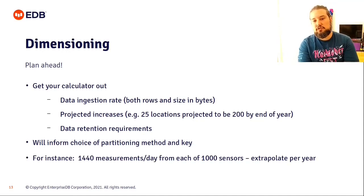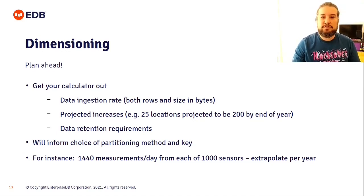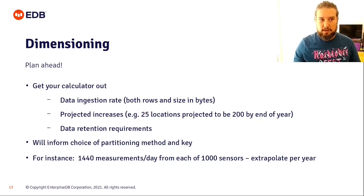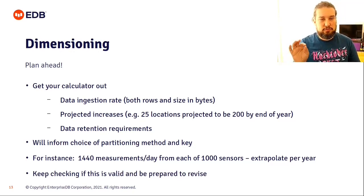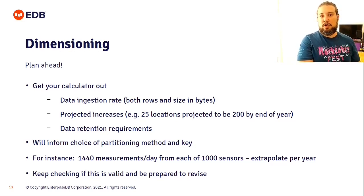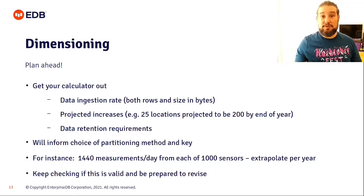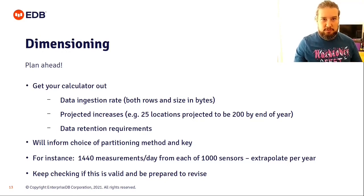One other thing to consider is data retention requirements. If you're required by law to retain data for six years, it's just going to keep increasing in size and you need to factor that in. For example, if you count measurements from a network of a thousand sensors and extrapolate over one year, you may accumulate about 500 million rows per year. Dimensioning effectively informs your choice of partitioning method and the partitioning key. You need to keep revisiting your requirements and be prepared to revise your estimates if things change — nothing should be cast in stone.